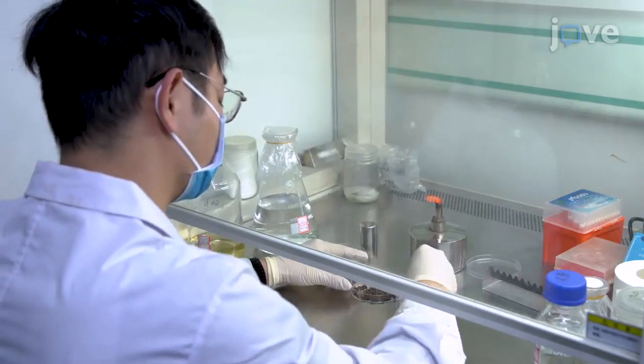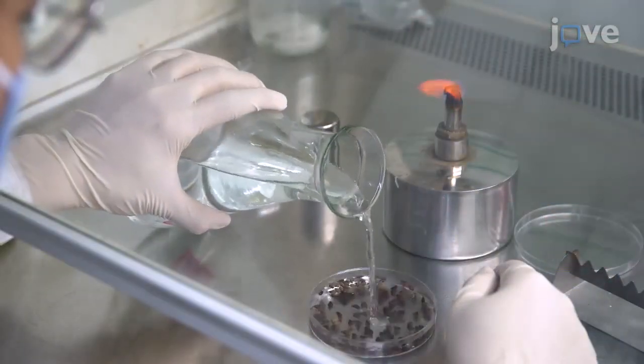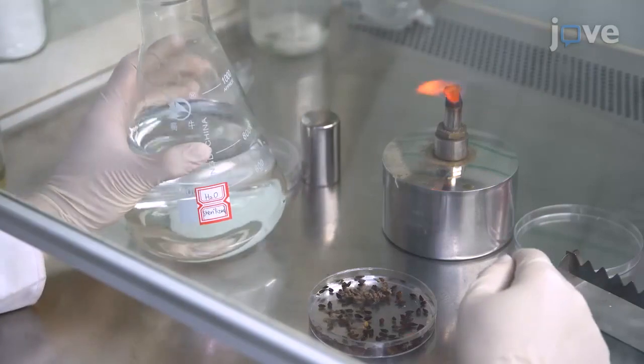Begin by selecting plump and undamaged Tartary buckwheat seeds and soaking the seeds in 28 degrees Celsius water for approximately 20 minutes.